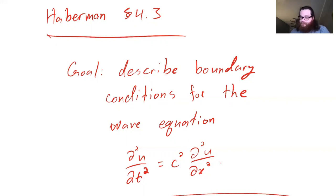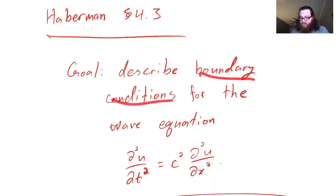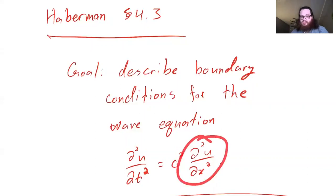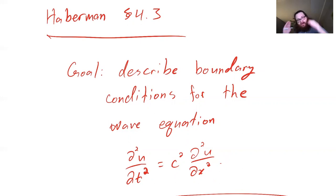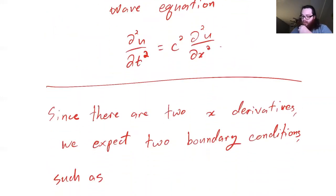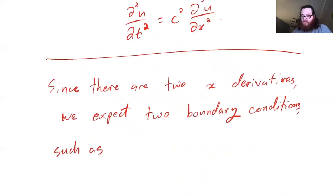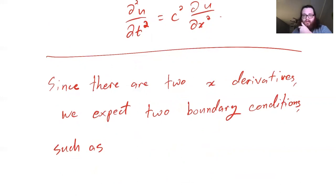In this section, we focus on boundary conditions involving the value or the derivative of the function at the boundary or prescribed points in the domain. Since we have two x-derivatives, we expect two pieces of boundary information. These can manifest in a number of ways, some of which will be familiar.